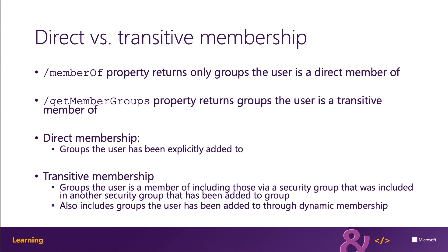To perform a transitive membership check, use the getMemberGroups method on the Microsoft Graph API or the getMemberGroups property on the Microsoft Graph .NET SDK. One thing to note: Office 365 groups cannot contain groups, so membership in an Office 365 group is always direct.